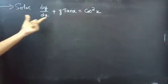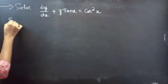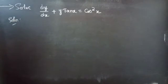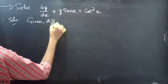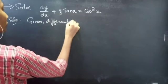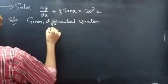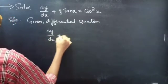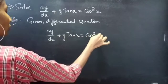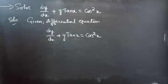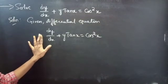Problem: solve dy/dx plus y tan x equals to cos squared x. Given differential equation: dy/dx plus y tan x equals to cos squared x, which is in standard form of linear equation.